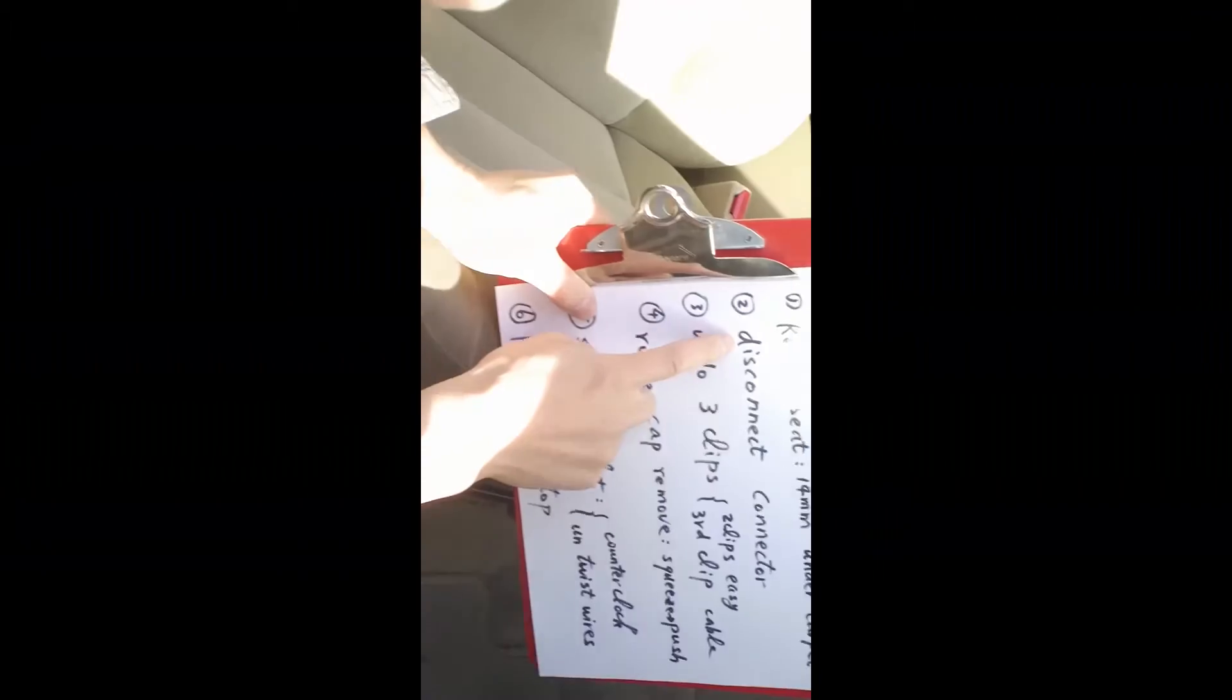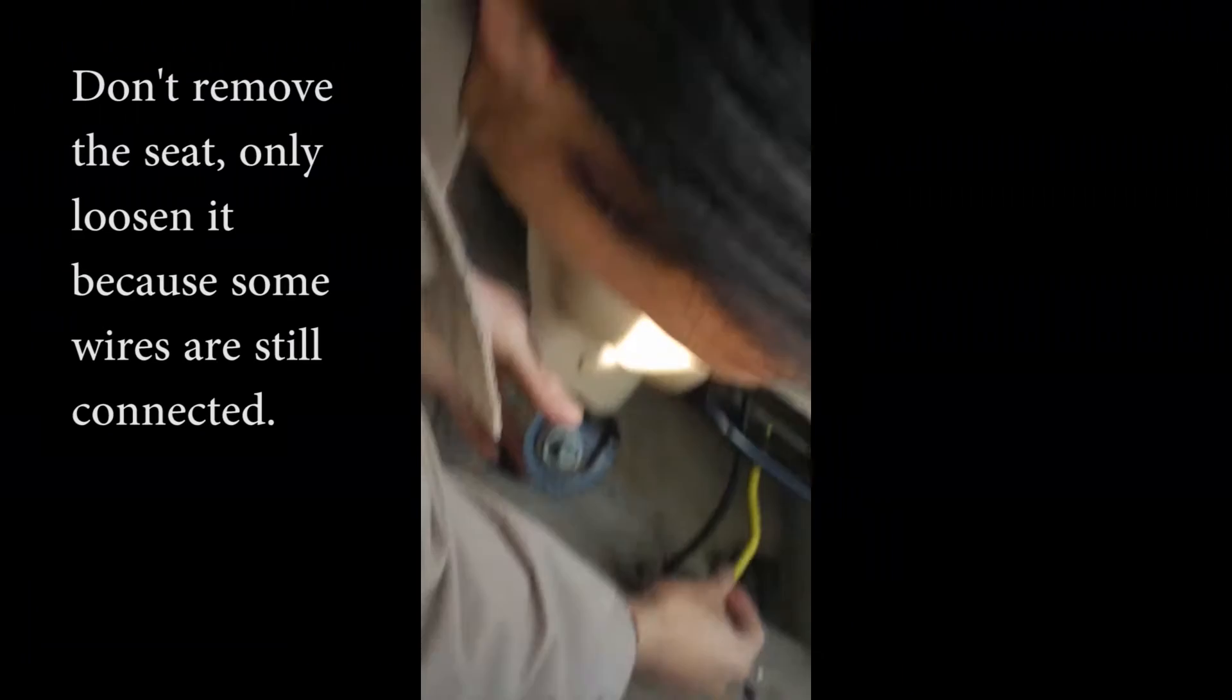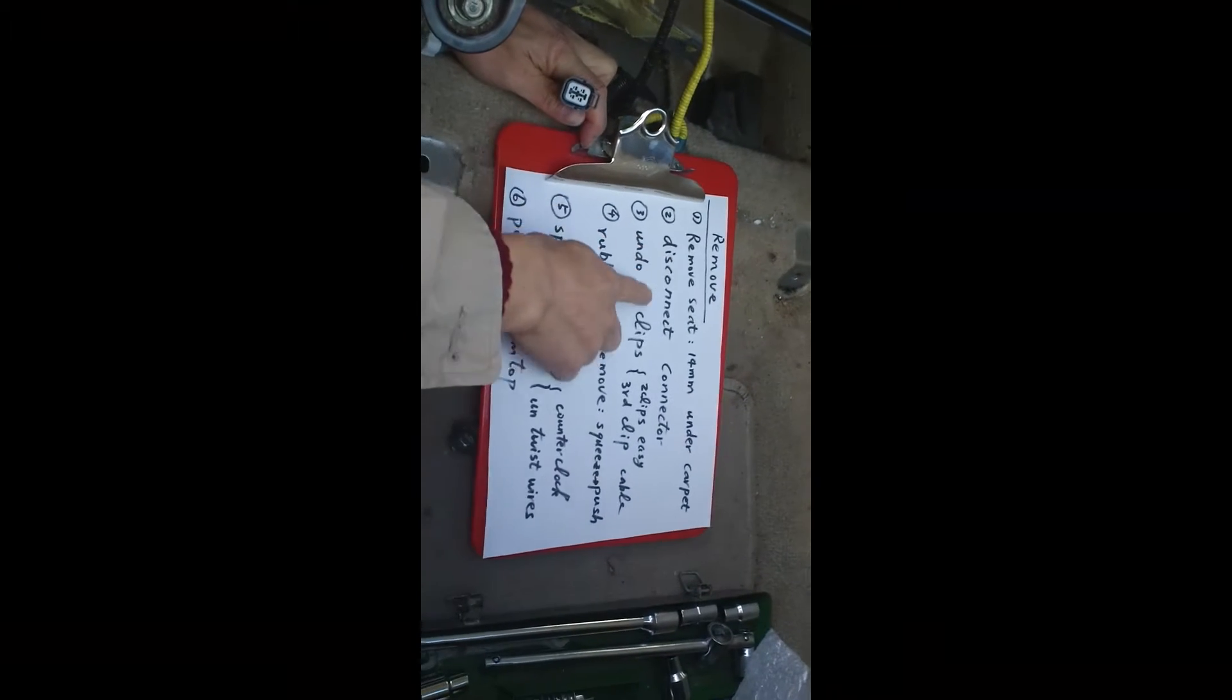And second step, find the connector and disconnect connector. Where is the connector? Once you open the seat, you see some wires. This and this are not the one you want to disconnect. So you need to open the carpet. Under the carpet, here's the clip. You press this. You disconnect this way. It's this connector you need to disconnect. That's the second step.